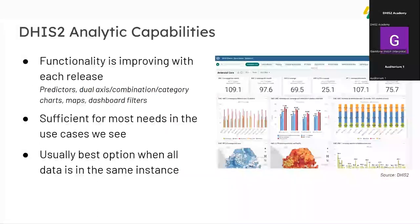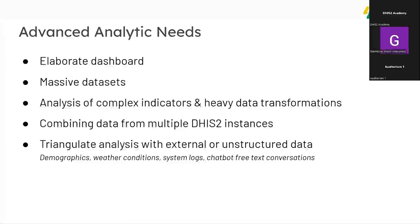DHIS2 has a lot of analytic capabilities and functionality is improving with each release. Most use cases can be achieved through DHIS2 — I had one partner who wanted help with a Power BI report, and after many hours we realized we could have done it all in DHIS2. The key takeaway is that you should have a really strong use case if you're going to pull data out of DHIS2 and visualize it in a BI tool. DHIS2 is usually the best option when you have all your data in one instance.